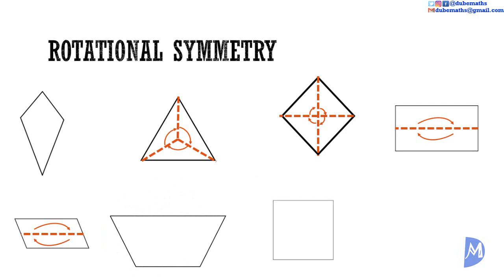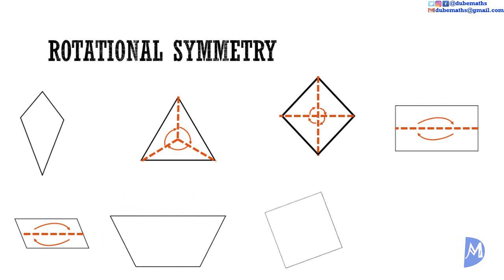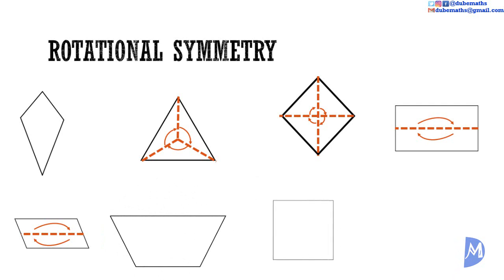The square, rotating: one, two, three, four — rotational symmetry of order four. And the circle: you do not even see the circle turning. It has an infinite order of rotational symmetry. Every fraction that you turn it, it will be coincident upon itself.